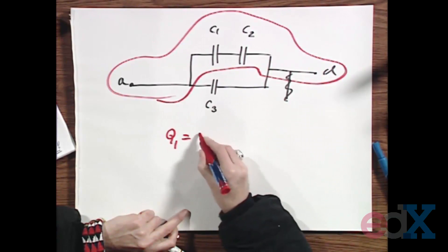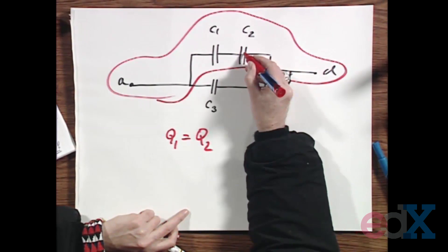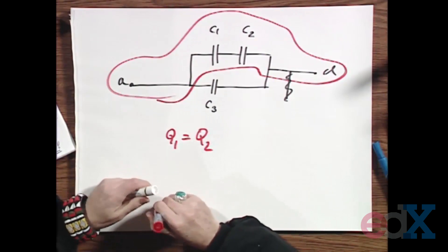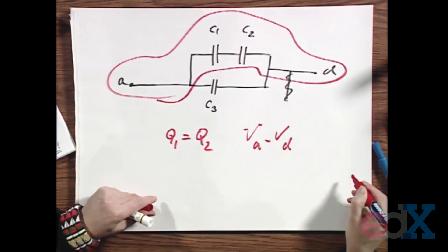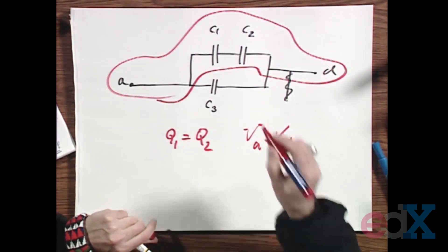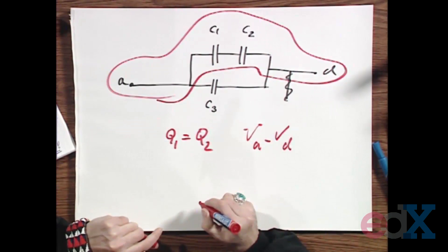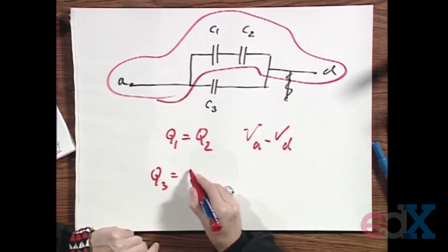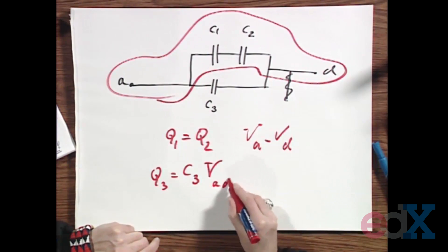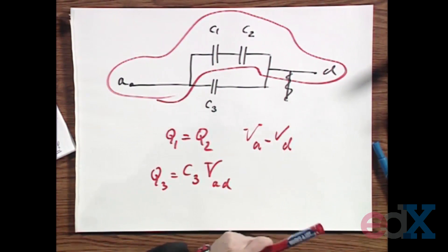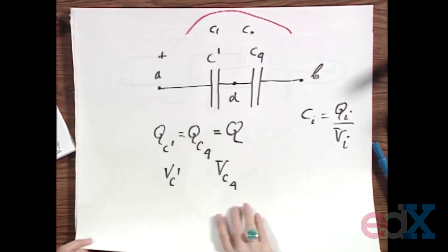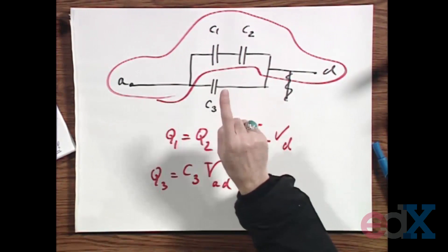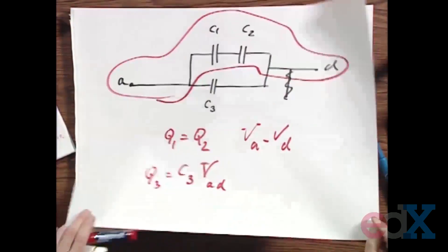Therefore Q1 must equal Q2 — the charge on C1 must equal the charge on C2. You do know what V_A minus V_D is, because we just calculated that. So you can calculate the charge on C1 and the charge on C2. Q3 equals C3 times the potential difference between A and D, which we just calculated. The potential difference between A and D is the potential difference over C_prime. So you know V_A minus V_D, and you can calculate all the charges. I'll leave you with that — rather straightforward, but they can be a little nasty.